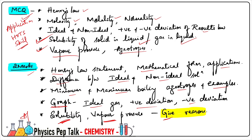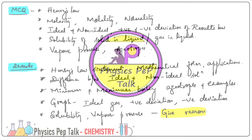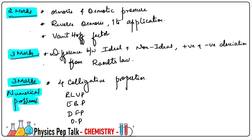Give-reasons questions require strong concept knowledge — application-level questions must be attended properly. Concept clarity is essential to answer these. Next 2-marks topics: osmosis and osmotic pressure, reverse osmosis and its applications. Van't Hoff factor is also asked for 1-mark or 2-marks. Maximum 2-marks questions will come from these topics.